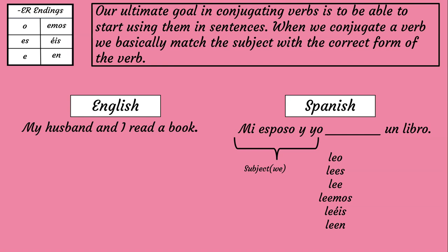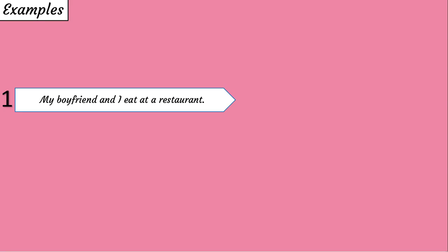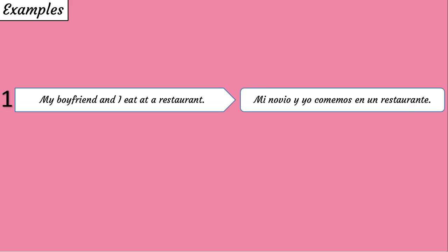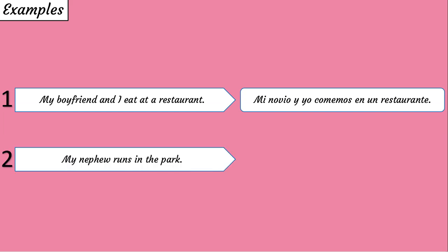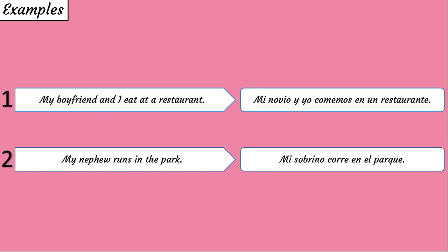Our ultimate goal in conjugating verbs is to be able to start using them in sentences. When we conjugate a verb, we basically match the subject with the correct form of the verb. In the following sentence, 'MI ESPOSO Y YO' is the subject. The subject pronoun that represents this subject is 'we,' and we know that the ending for 'we' is EMOS. So the correct form for this subject would be LEEMOS. To say 'My boyfriend and I eat at a restaurant,' we would say 'Mi novio y yo comemos en un restaurante.' To say 'My nephew runs in the park,' we can say 'Mi sobrino corre en el parque.'